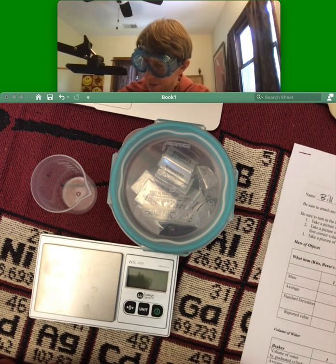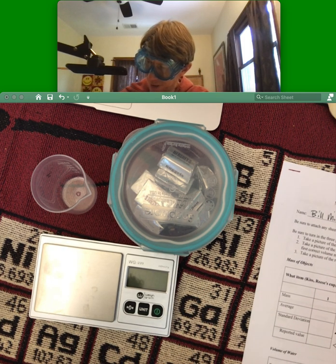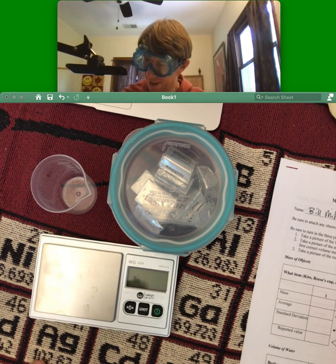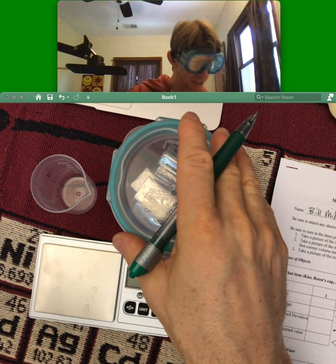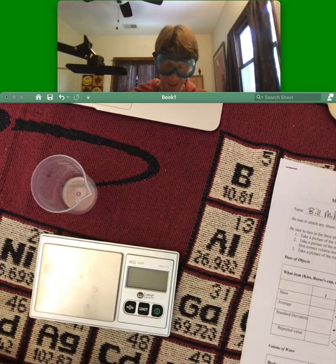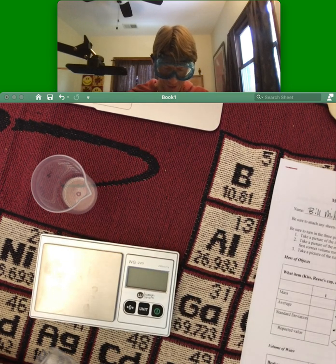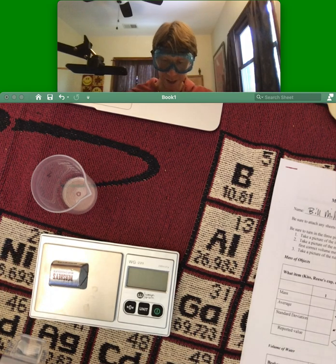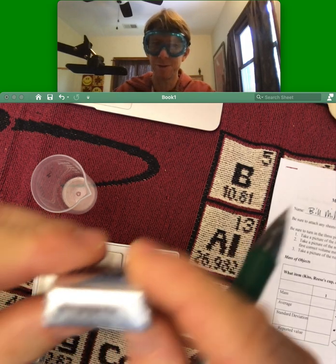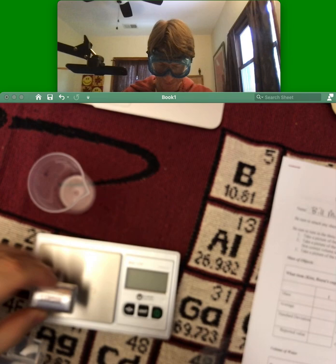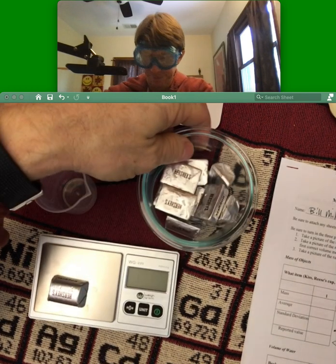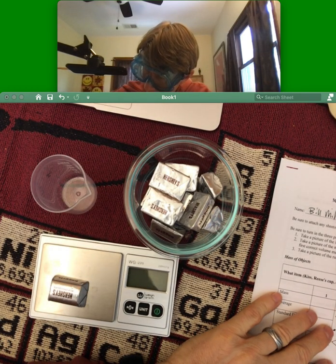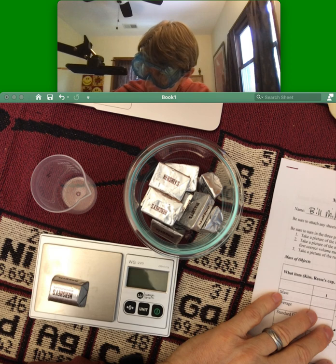And I'll go ahead and write my name on it. It tells me some pictures that I'm going to have to take, but for now it says, what item—kiss, Reese's cup, etc.—are you using? I'm going to go ahead and fill that in even before I do the procedure. So I am using Hershey's milk chocolate nuggets.